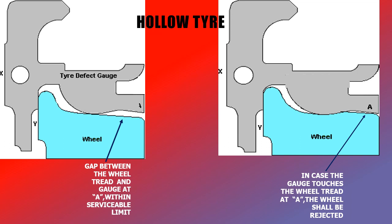Hollow tire: in the course of service, the wheel develops some wear of this nature — a concave curvature is formed on the tread of the wheel. Normally the wheel tread has almost a straight line of inclination, but in case of a hollow tire it forms a dip. Placing the gauge in this way, if it doesn't touch the tread, the wheel is within serviceable limit. But if point A touches the tread, then the wheel is hollow and shall be rejected.